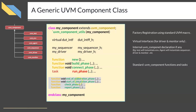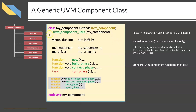There could be additional functions like end of elaboration, start of simulation, etc., which you can ignore at this point. To summarize, this is the general outline of any UVM component class. Classes extend from the corresponding component class — for example, a driver extends from UVM driver and an ENV extends from UVM ENV. Immediately after the first statement you write the factory registration macro, then list any virtual interfaces, followed by all member variables and member classes, and then the new function, build phase function, connect phase function, and run phase task.